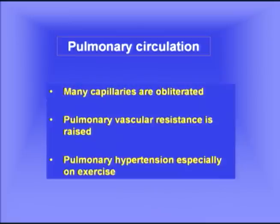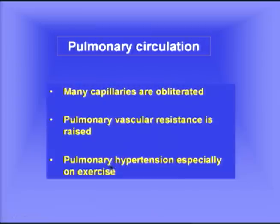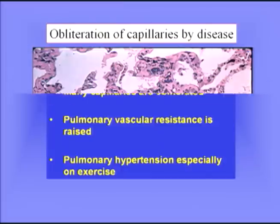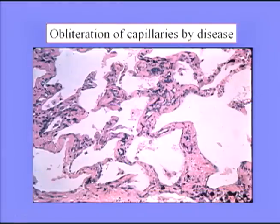Looking at the pulmonary circulation, which is quite abnormal in these patients — one reason is that the capillaries are obliterated. The pulmonary vascular resistance is therefore raised because you've lost many of the conduits — the capillaries are just destroyed. As a consequence, you get pulmonary hypertension, particularly on exercise, but patients with severe disease can certainly develop pulmonary hypertension at rest. The micrograph reminds us that there are very few capillaries to be seen, and they've all been obliterated by the extensive fibrosis.